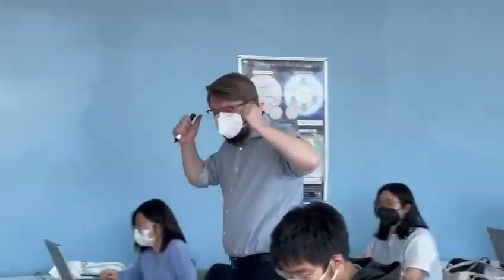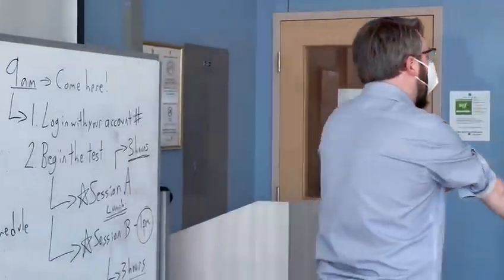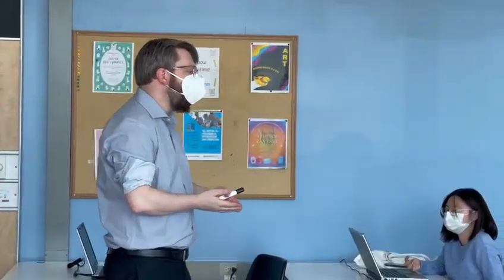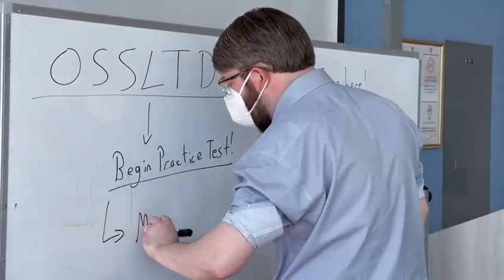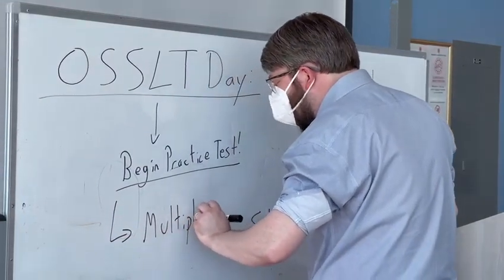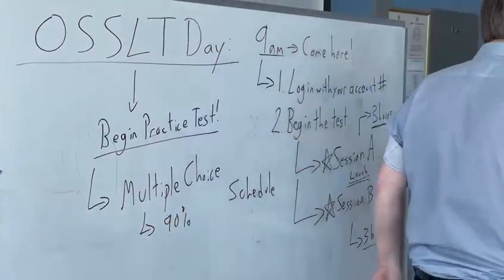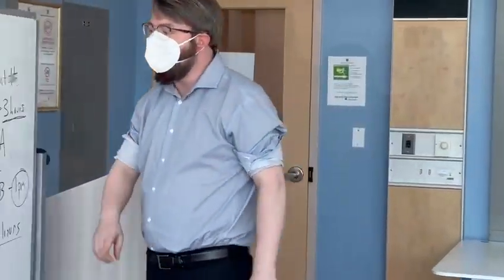Everyone else is in Session A — great. The easy way to know the meaning is to read the whole story and think about it as a whole, because even if you don't know a couple of words, if you know the main idea of the story you can still probably answer the questions. Remember: 90% of this test is multiple choice. That means all of the first five or six questions for Session A and the first five or six questions for Session B are multiple choice.